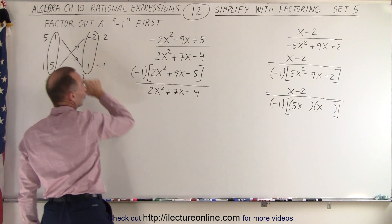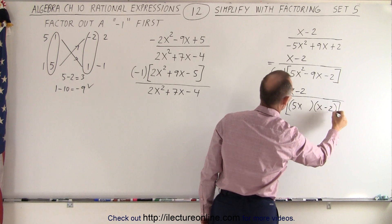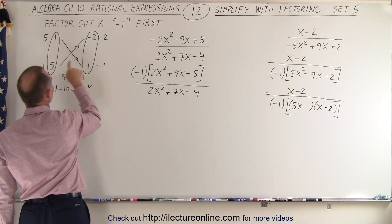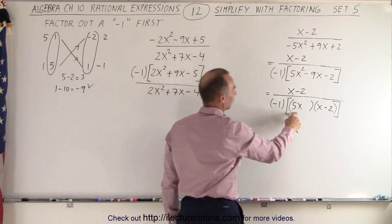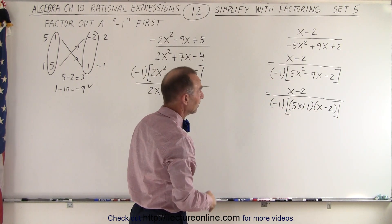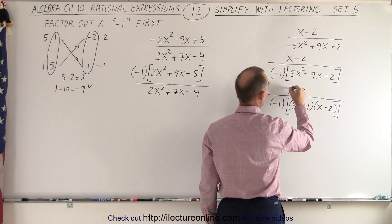We have a 1x minus 2. So this will be 1x minus 2. And we need a positive 5x plus 1. So a positive 5x plus 1, that makes it a little bit easier to factor. Now we realize that we have an x minus 2 and an x minus 2 that cancels out. So this becomes 1, this becomes 1.